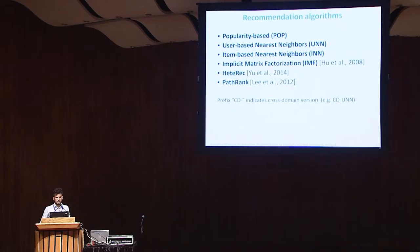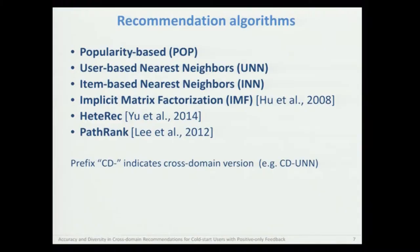As a recommendation algorithm, we consider six state-of-the-art methods: the popularity-based method as a baseline, then user-based and item-based nearest neighbor methods, an implicit matrix factorization method, and two graph-based methods — ItemRank and PathRank. The last two are the only hybrid methods and can also use content-based information in the form of a graph, in this case extracted from DBpedia. The other methods are purely collaborative filtering.